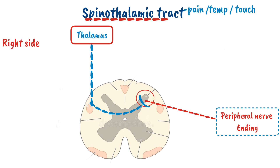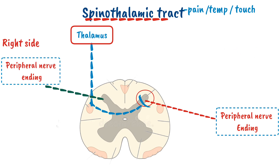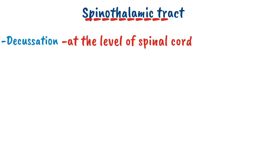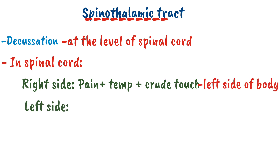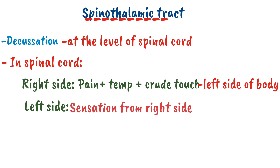Similarly, on the right side, the sensations of pain, temperature and touch travel from the peripheral nerve endings to the dorsal horn, and will again decussate — cross toward the opposite side — and ascend to the thalamus. So in the spinothalamic tract, decussation occurs at the level of the spinal cord. This means the right side of the spinal cord contains pain, temperature and touch sensation from the left side, and the left side contains these sensations from the right side.